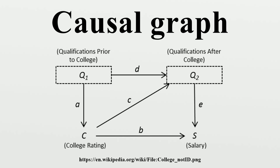Causal models often include error terms, or omitted factors, which represent all unmeasured factors that influence a variable Y when par are held constant. In most cases, error terms are excluded from the graph. However, if the graph author suspects that the error terms of any two variables are dependent, then a bidirected arc is drawn between them. Thus, the presence of latent variables is taken into account through the correlations they induce between the error terms, as represented by bidirected arcs.